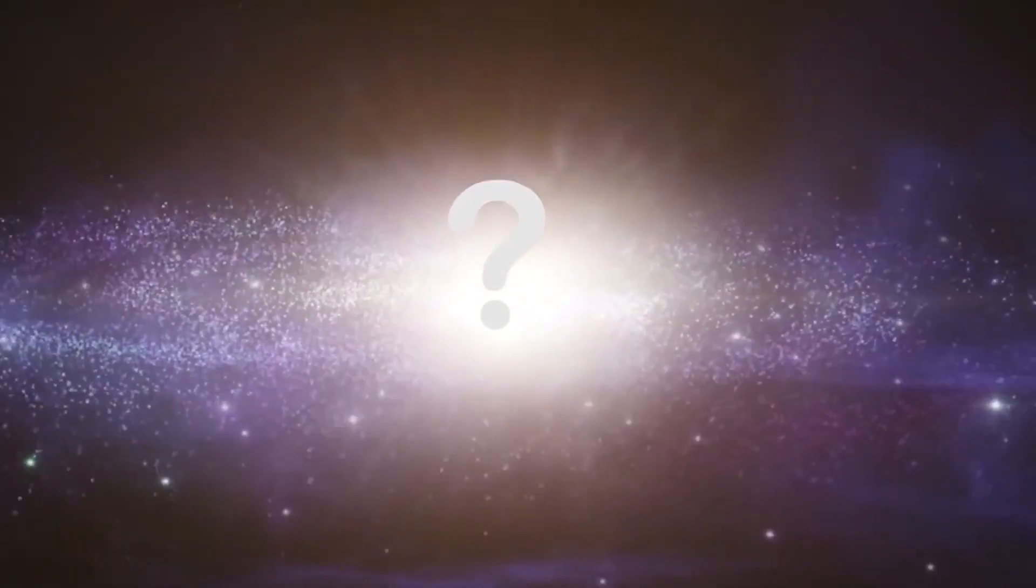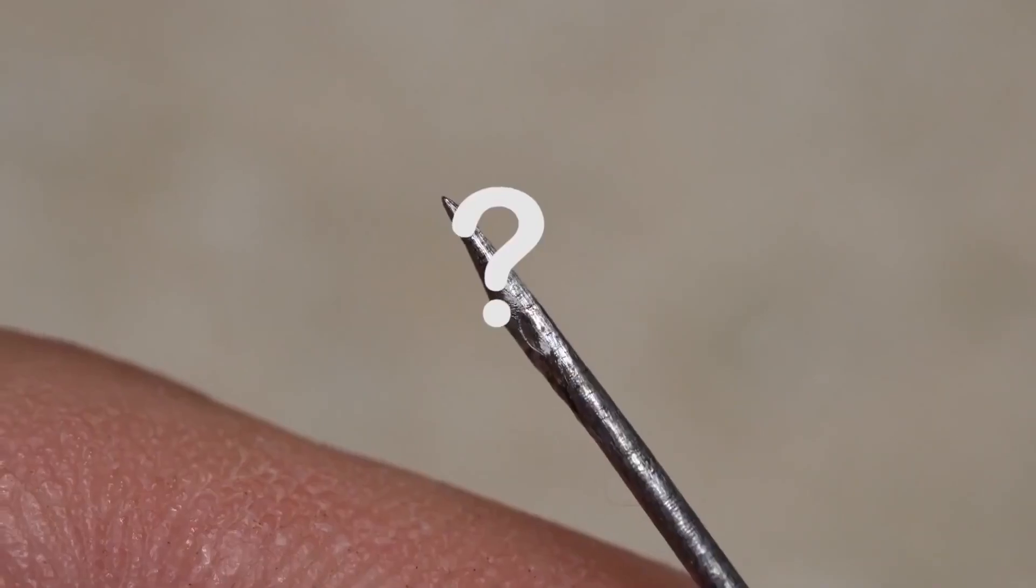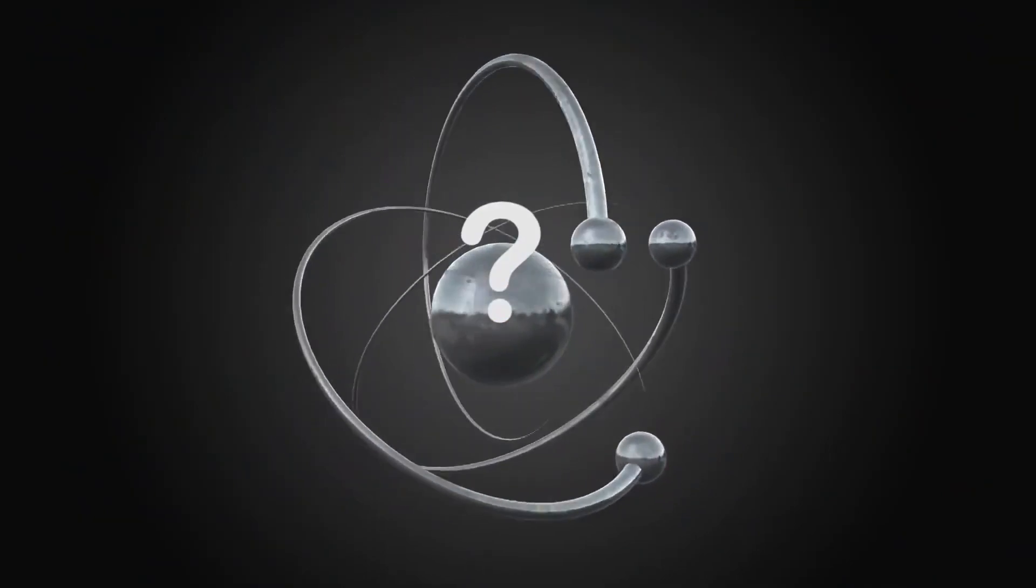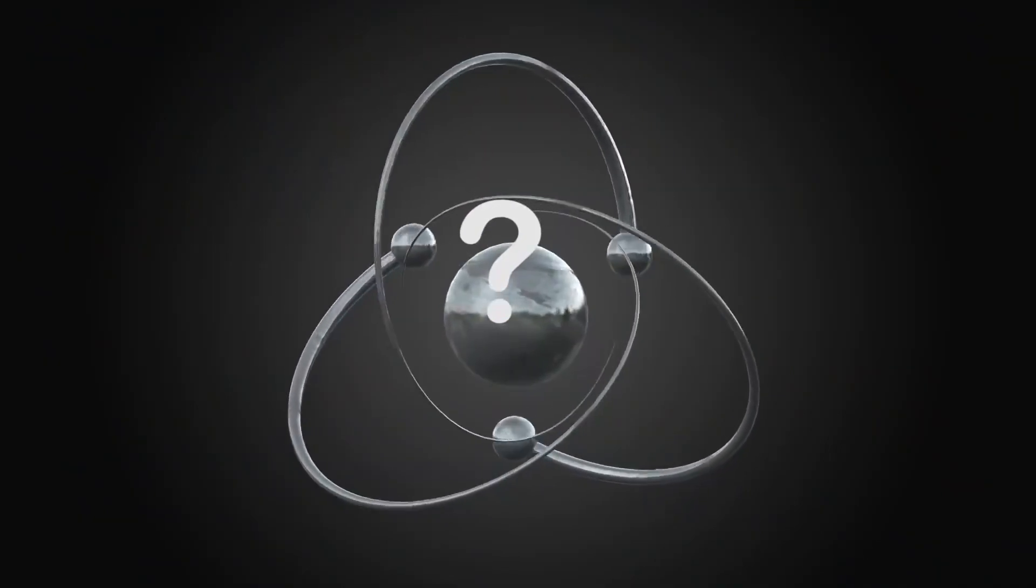What if our universe can fit on the tip of a needle? What if the solar system is just an atom, one of the myriads of the same, which are part of some other matter?